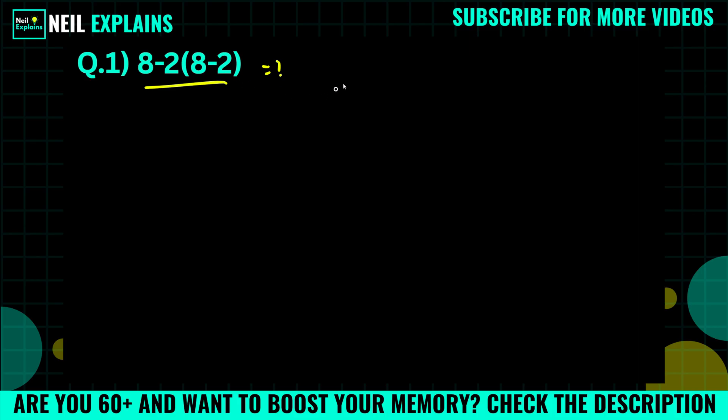So first we will solve for this one. What we have: if you think like 8-2 and 8-2, 8-2 that is 6 into 8-2 that is 6, and the answer is 36, then you are wrong. So first we will solve with PEMDAS. In PEMDAS we have first do parenthesis.